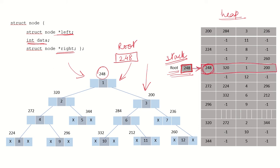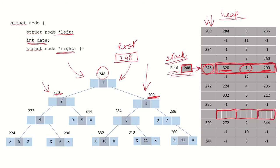Looking at the heap, at address 248 we have the root node with element 1. It has a pointer to the left node at address 320 and a pointer to the right node at address 200. Assuming each column corresponds to 4 bytes, the integer data 1 requires 4 bytes, address 320 requires 4 bytes, and address 200 also requires 4 bytes of storage.